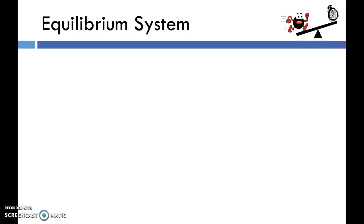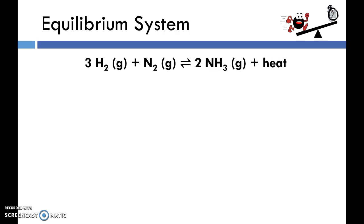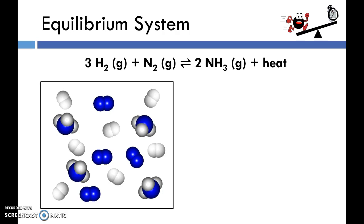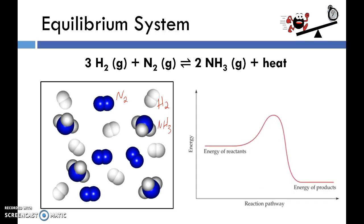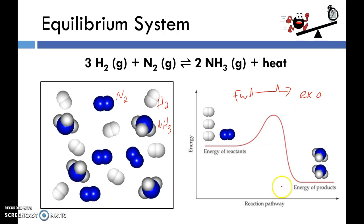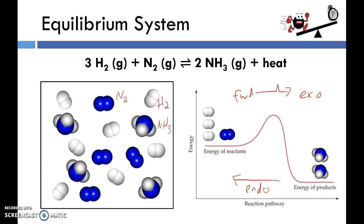Let's look at the synthesis of ammonia: 3H2 + N2 yields 2NH3 + heat. The white diatomic molecules are H2, the blue ones are N2, and this is NH3. In equilibrium systems everything is mixed together — you don't have reactants on one side and products on the other, especially with gases. The forward reaction is exothermic, which is why heat appears on the product side. Therefore the reverse reaction must be endothermic, and that will matter when we look at temperature changes.